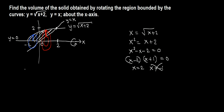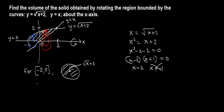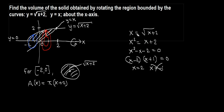For negative 2 to 0 we get a disk. The radius is always given by the y-coordinate, which is root x plus 2. The area of this disk in terms of x is pi times r squared, so pi times root x plus 2 squared, which simplifies to pi times x plus 2.